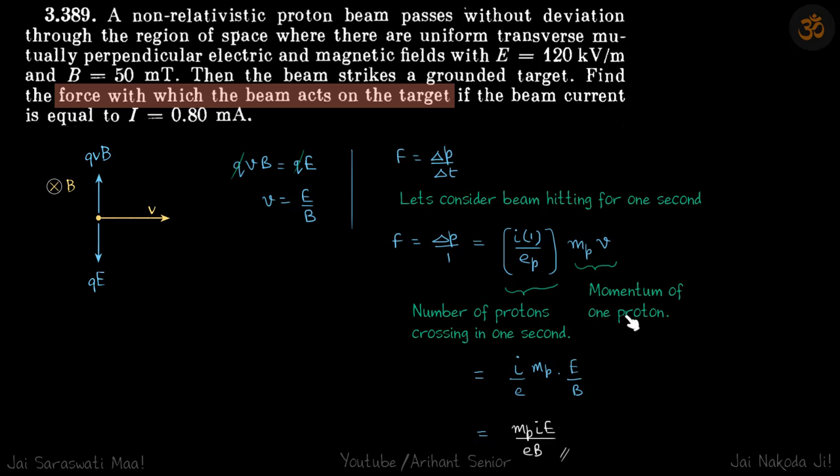Momentum of one proton will be Mp times v. We just put them together, substitute the value of v as E by B, and we get our answer.